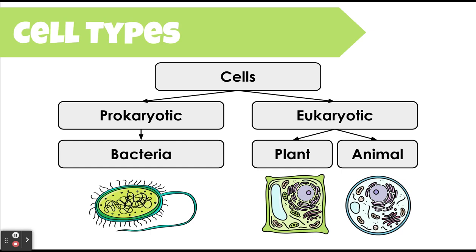We can even go further and break them up. In animals, for example, there are many different types of cells — skin cells, stomach cells, hair cells — the list goes on and on. But these are the main groupings of cells that you need to be familiar with in our class.